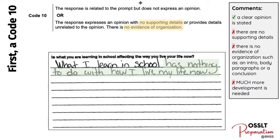As you can see, the response expresses a clear opinion: 'What I learned in school has nothing to do with how I live my life right now.' However, there is no supporting detail and no evidence of organization, and so this person has earned a Code 10 because of that.